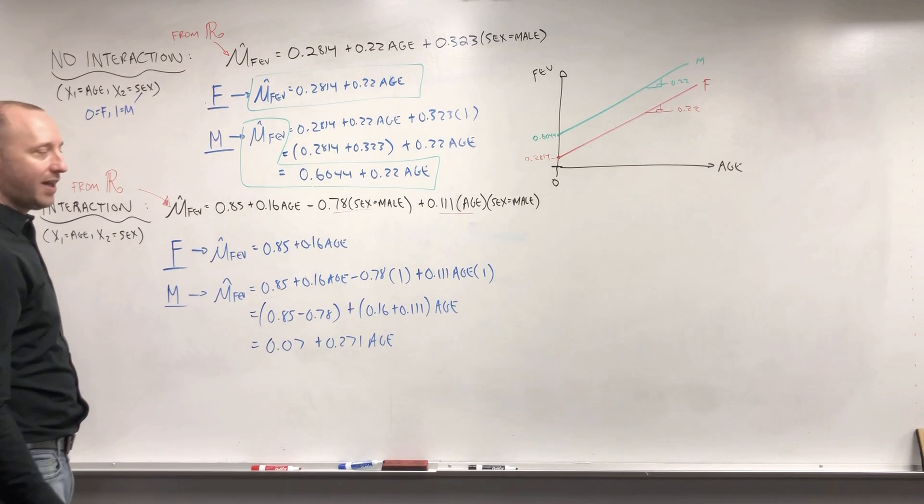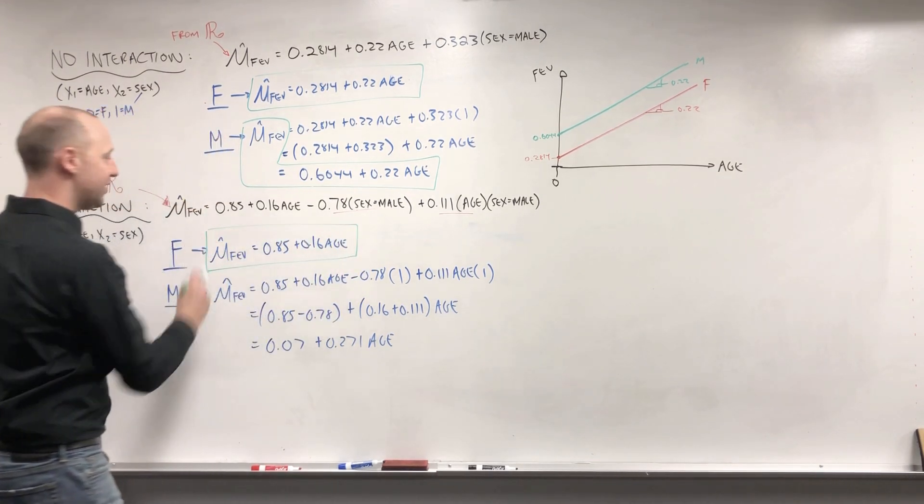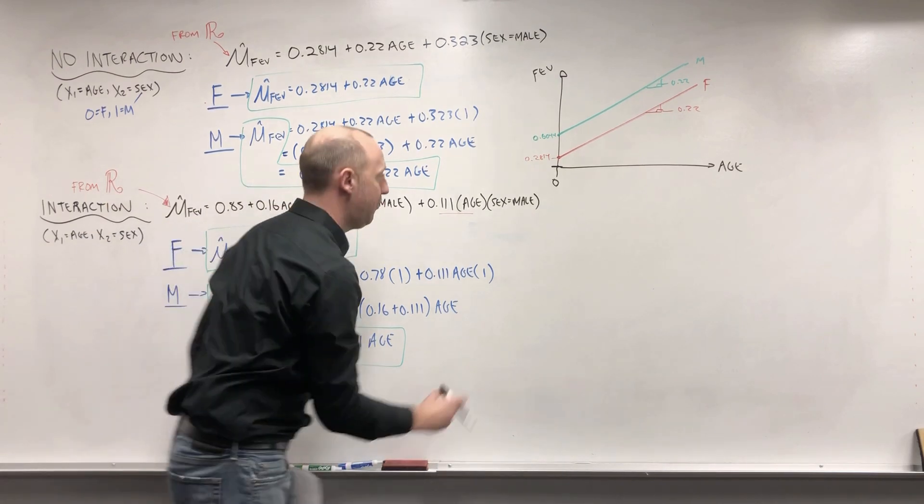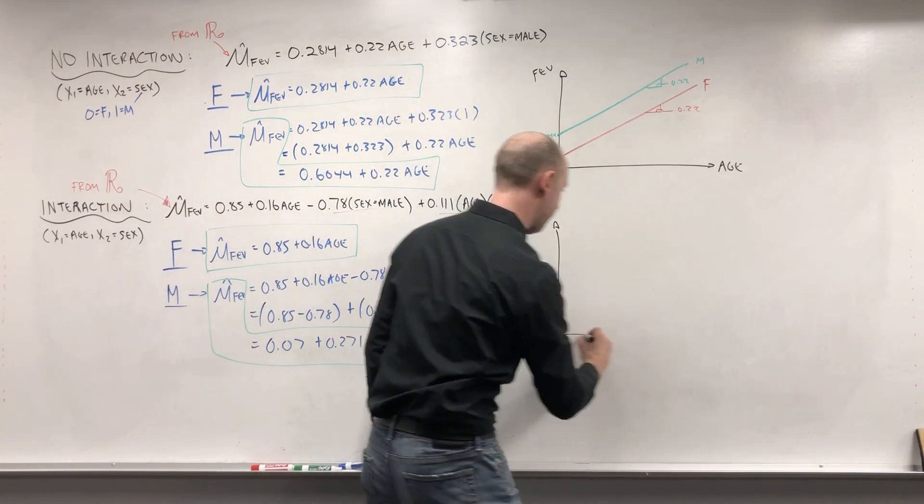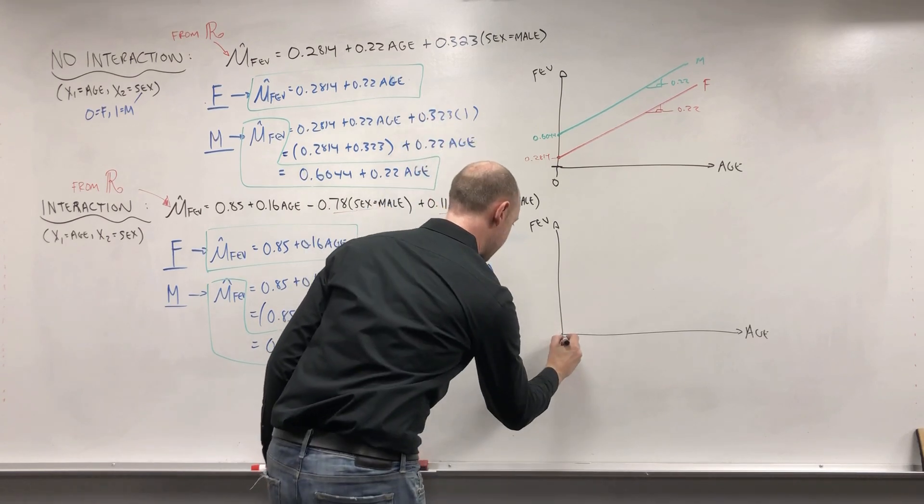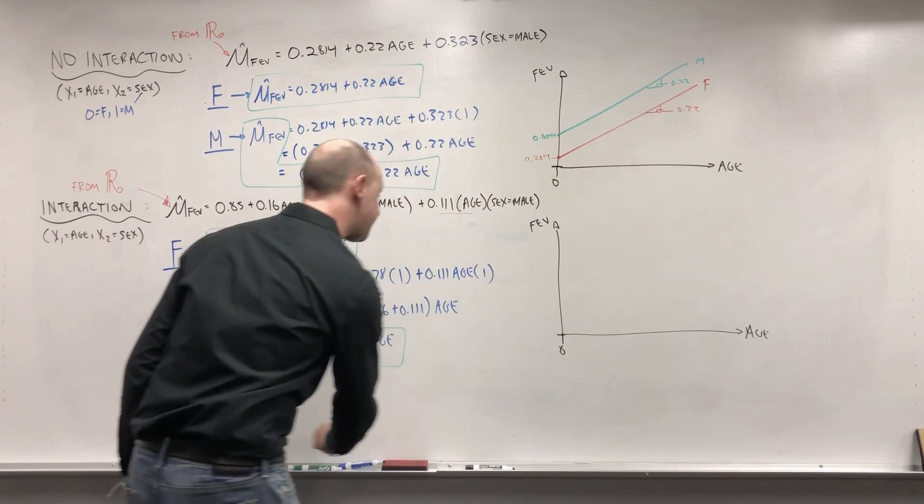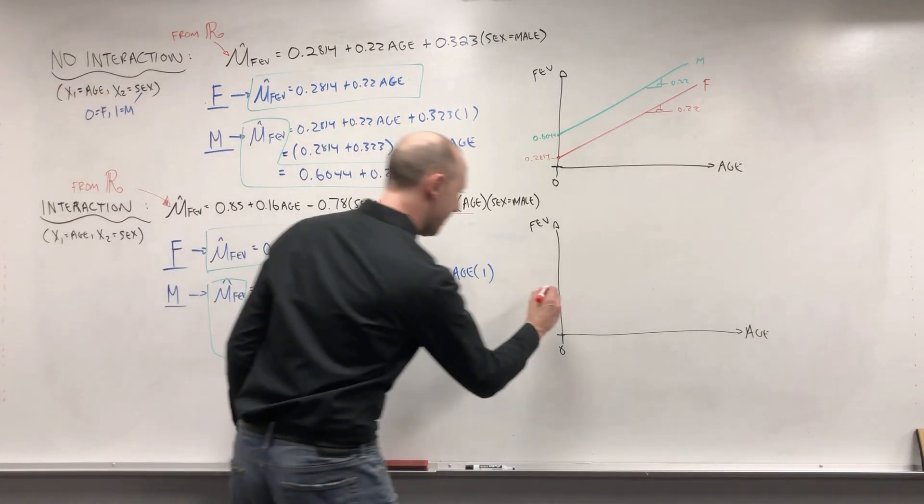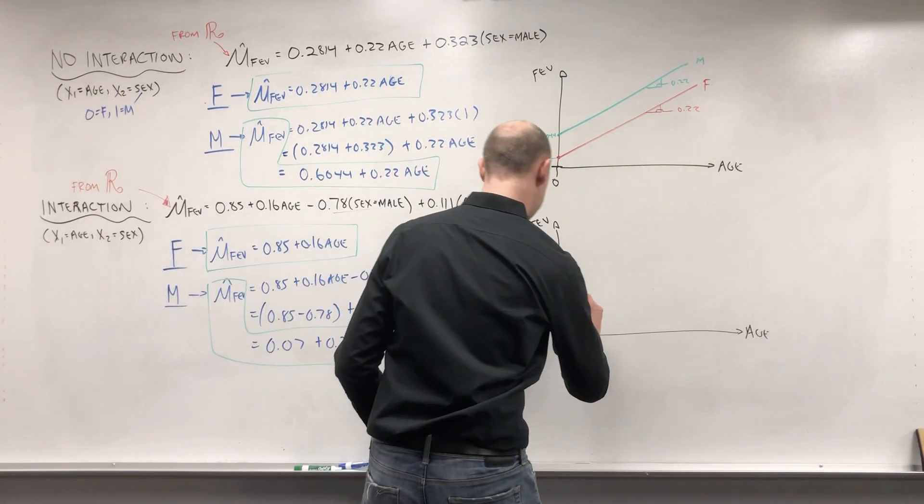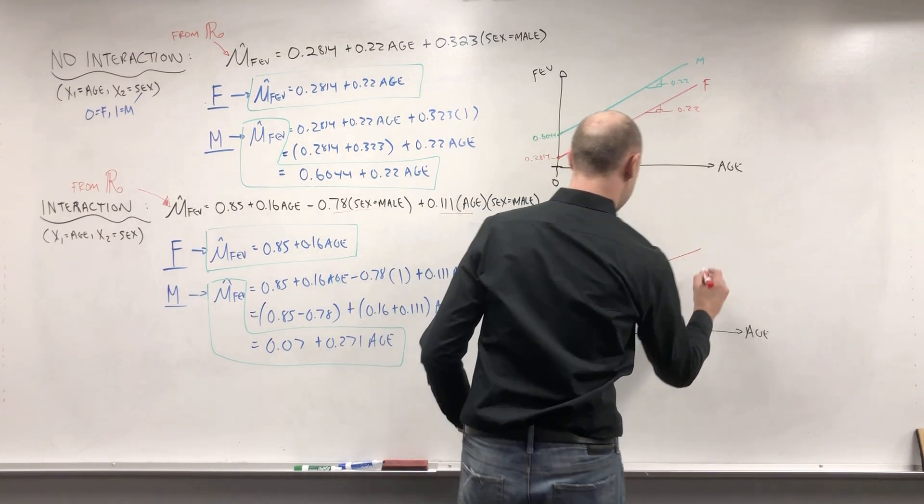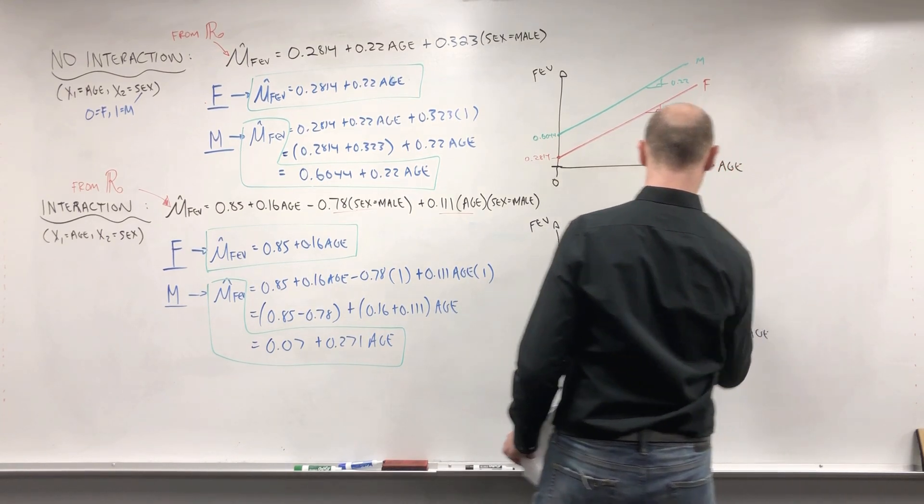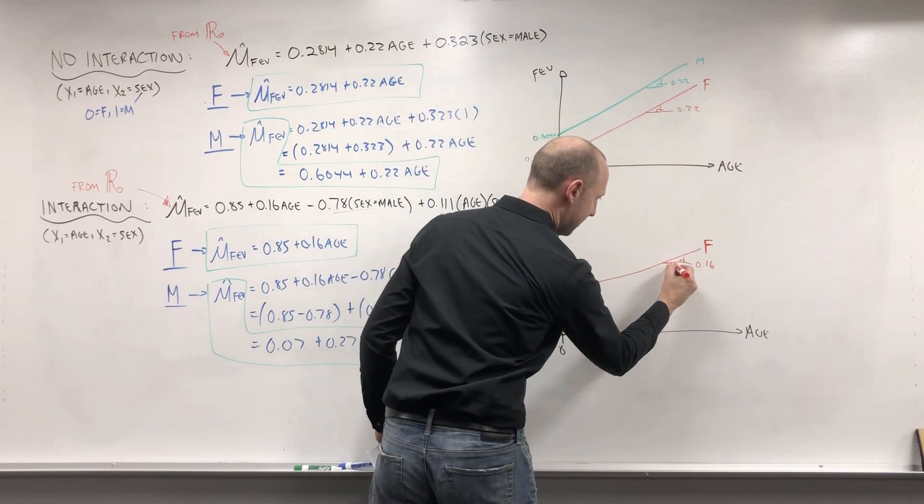And again, so now when we allow there to be interaction or effect modification, here's the regression equation we'd end up with for females and here's the equation for males. If we were to take a look at plotting these out, here's age, here's the FEV, and let's look at age 0. First let's do it for females, their intercept is 0.85 and the slope is 0.16. These are females and again this slope is 0.16. So that's the slope of the line there.